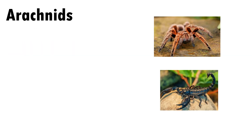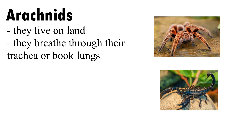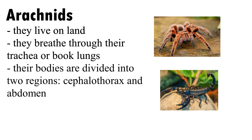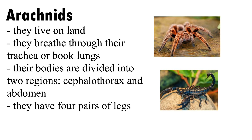Arachnids live on land. They breathe through their trachea or book lungs. Their bodies are divided into two regions: the cephalothorax and the abdomen. They have four pairs of legs.